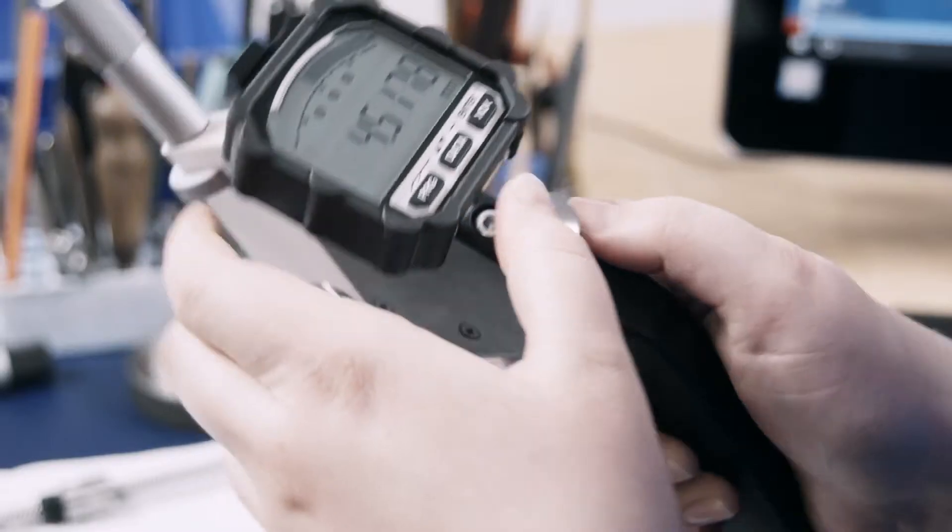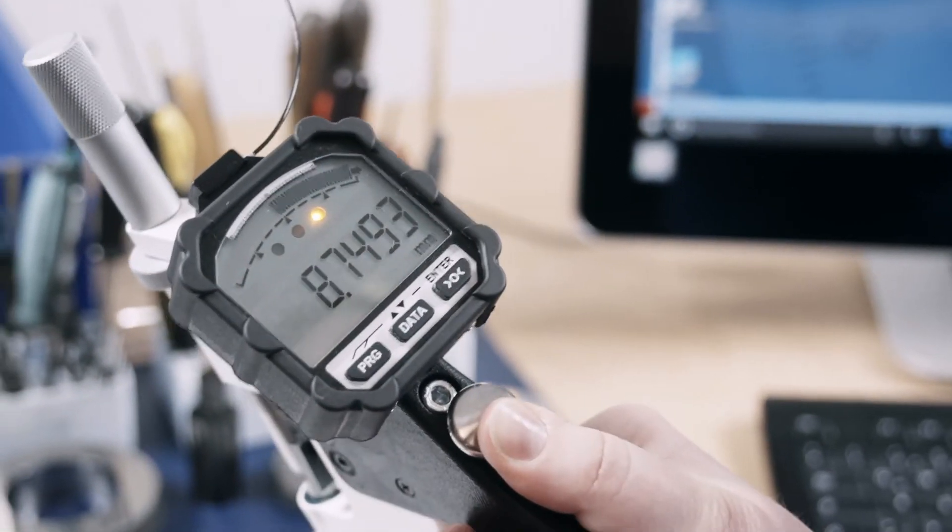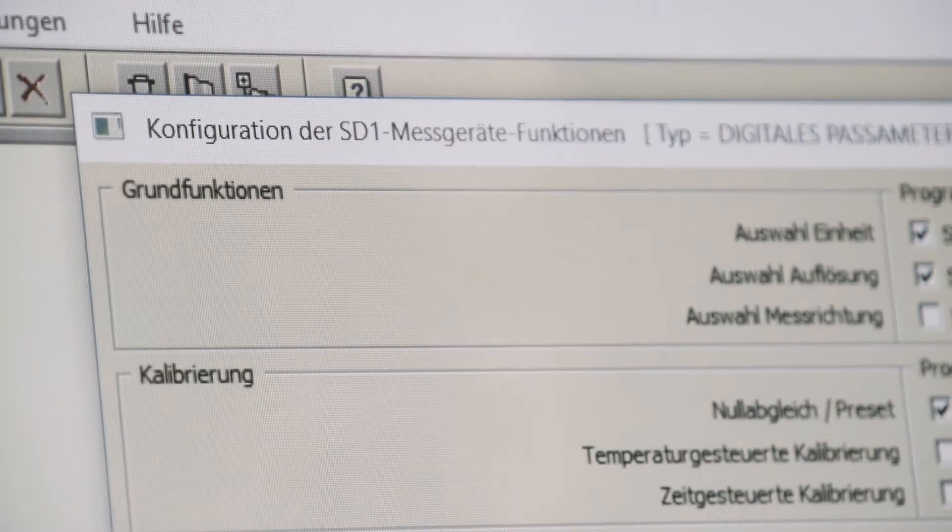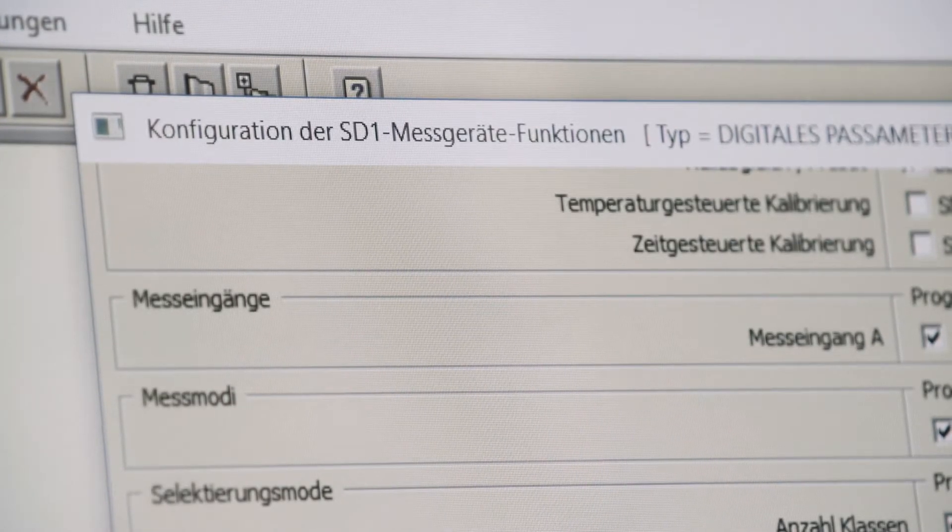An integrated temperature monitoring feature permits direct control of ambient conditions. Further configurations such as calibrations, adjustment of measuring modes, or password protection are possible with the optional FMS SD1 software.